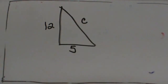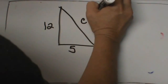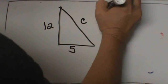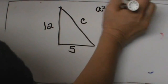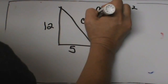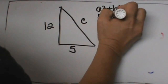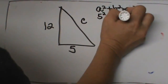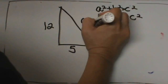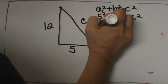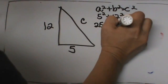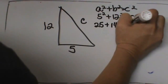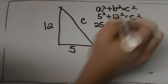This is a forward Pythagorean theorem problem. We are going to take A squared plus B squared equals C squared, and we are going to plug in 5 and 12 and solve for C. So you get 25 plus 144 equals C squared.